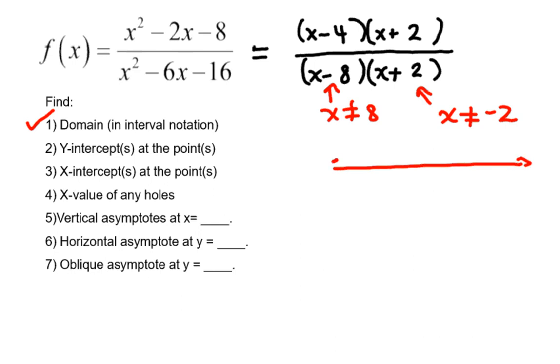On a number line, let's say negative 2 is over here, and 8 is over here. Well, we want to avoid the negative 2 and the positive 8. So our domain in interval notation would start at negative infinity and go up to negative 2,